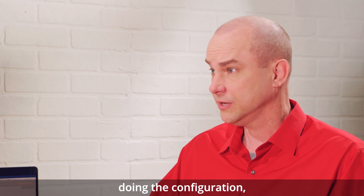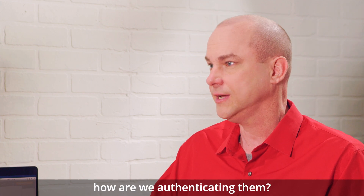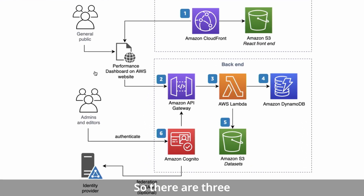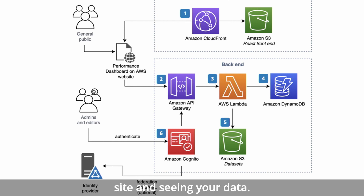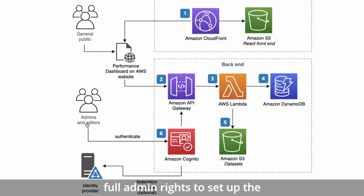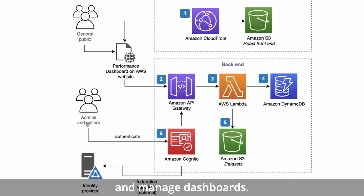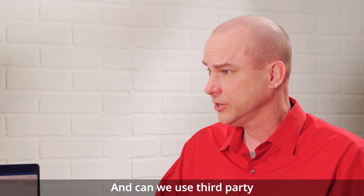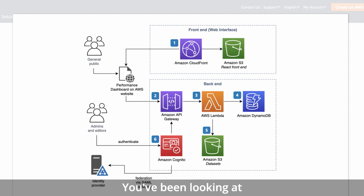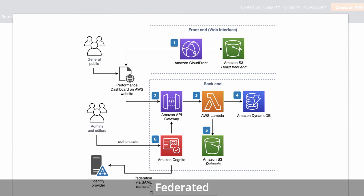So this is where the admin is actually doing the configuration. How are we authenticating them? There are three types of users: the public user where there's no authentication — they're just coming to your site and seeing your data. On the back-end, we have an admin, which has full admin rights to set up the site, and then an editor role where you can actually create and manage dashboards. We also have support for SAML and federated access through Cognito.